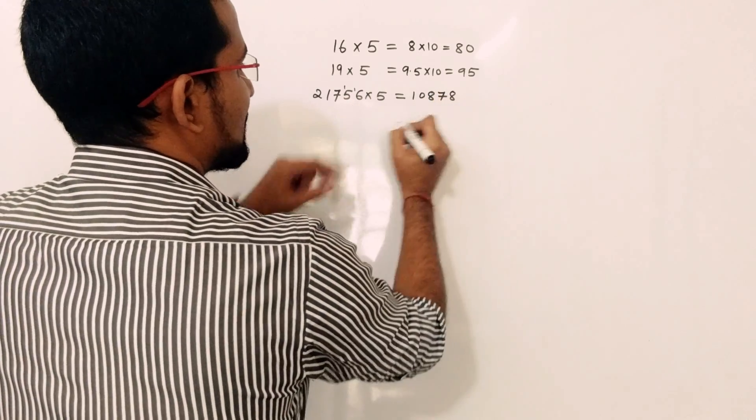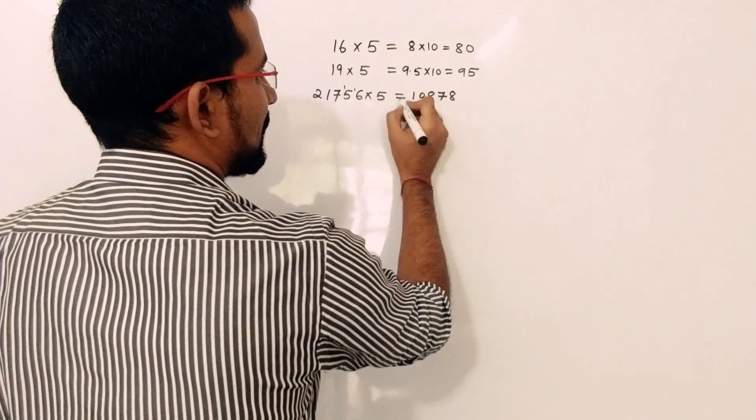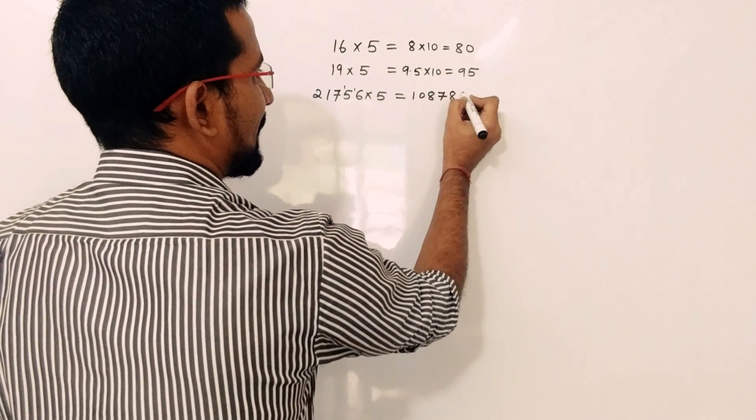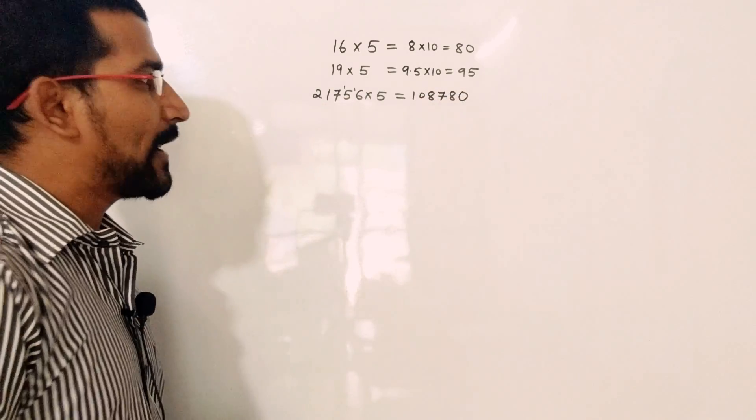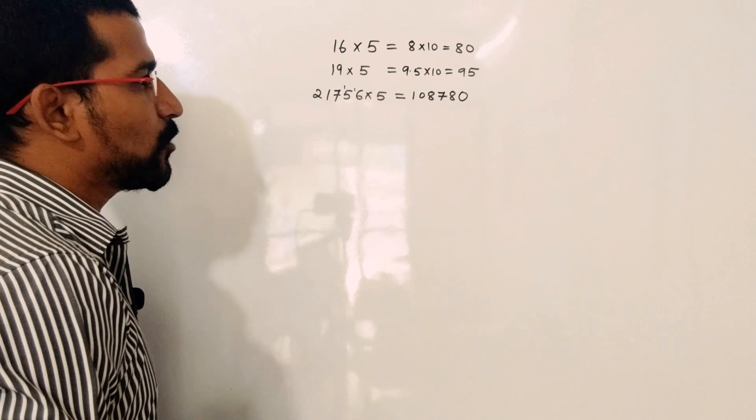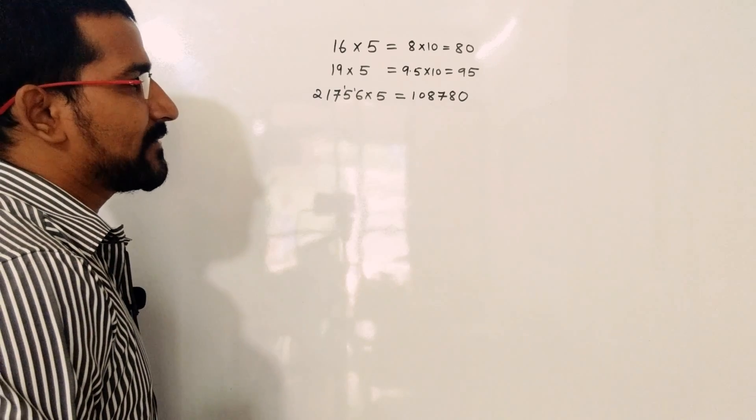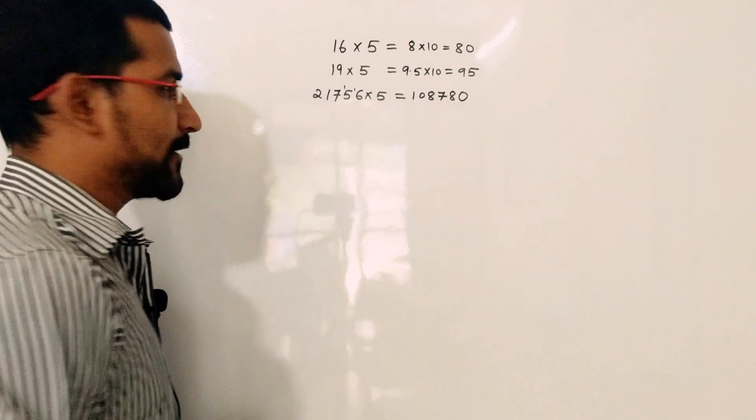Continuing the division of 21,756 by 2, carrying remainders through each digit. Once the division is complete, multiply that result by 10, giving 108,780. So 21,756 multiplied by 5 equals 108,780.